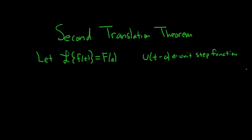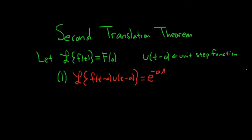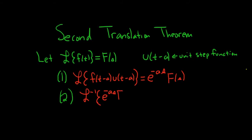There are two statements, one going forward and one going backwards. The first says that if we take the Laplace transform of f of t minus a times the unit step function, this is equal to e to the negative a·s times big F of s. Going backwards would be the inverse of this: the inverse Laplace of e to the negative a·s times F of s equals f of t minus a times u of t minus a.